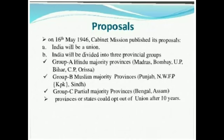Cabinet mission members met with Muslim League leader Muhammad Ali Jinnah. The members of the cabinet mission met with the leaders of all the political parties to find their point of view, but they could not reach any result. On 16th May 1946, the cabinet mission published its proposals. The proposals included that India would be a union, and India would be divided into three provincial groups.